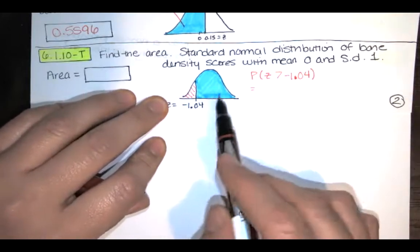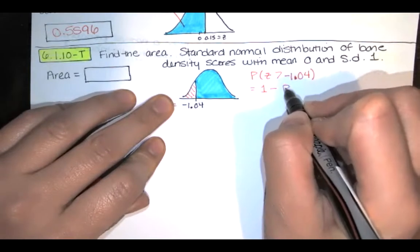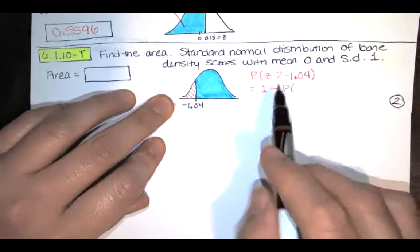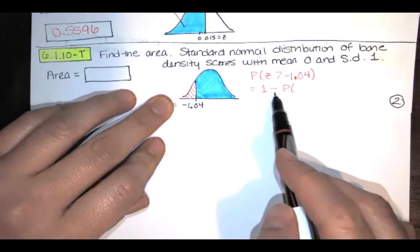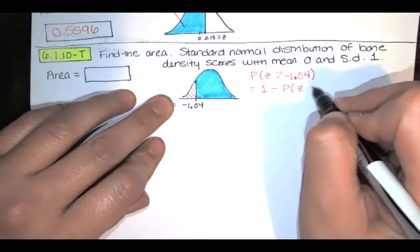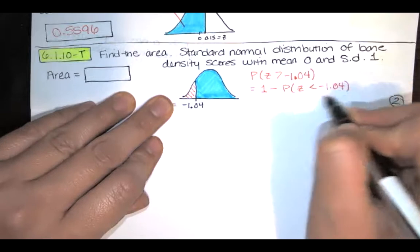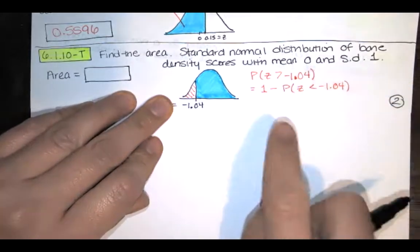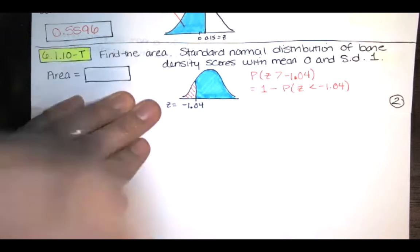So if I ever need area to the right I always write it as 1 minus the corresponding area to the left. So the probability that z is greater than this number is 1 minus the probability that z is less than that number and this is something that I can look up in my table and once I find that I can subtract it from 1 and that's going to be that blue area.